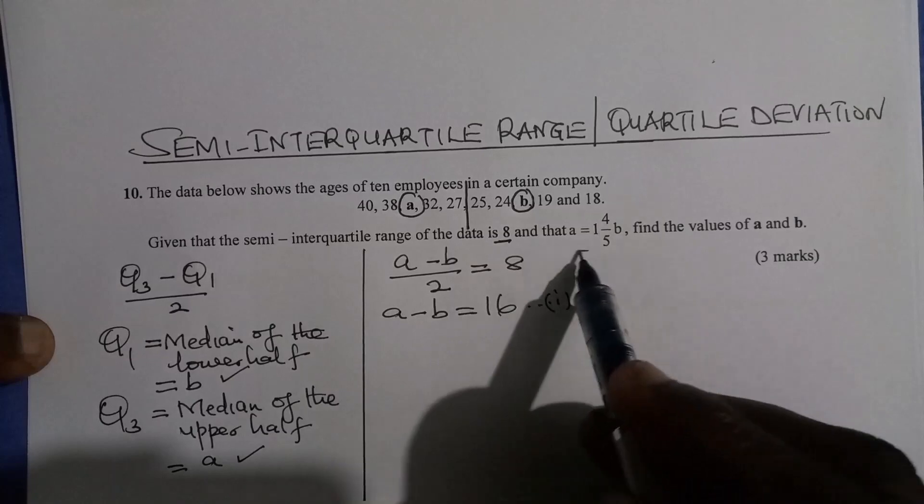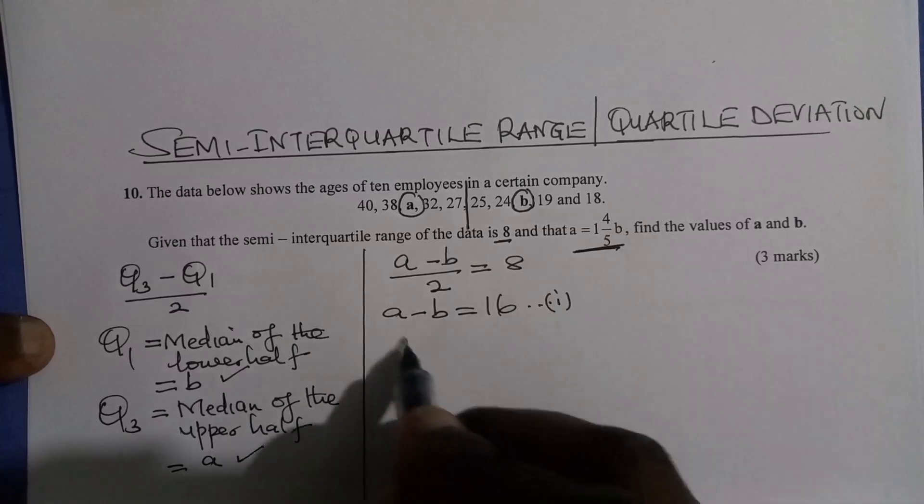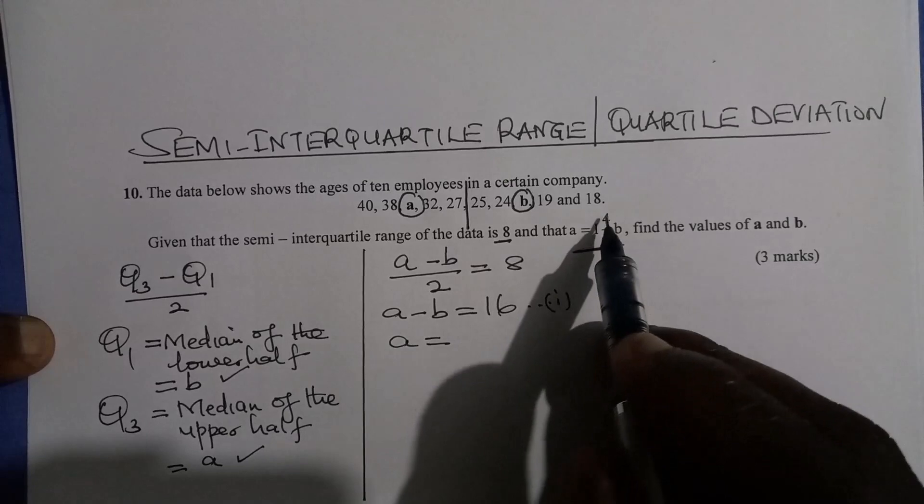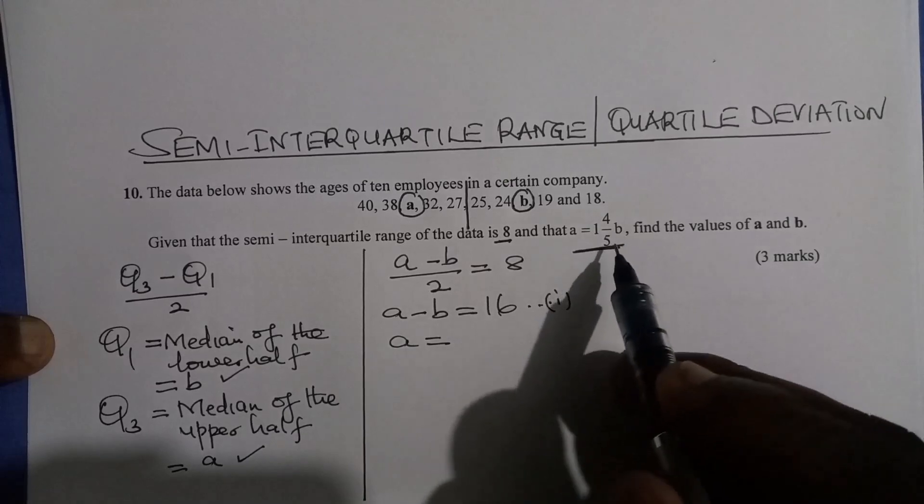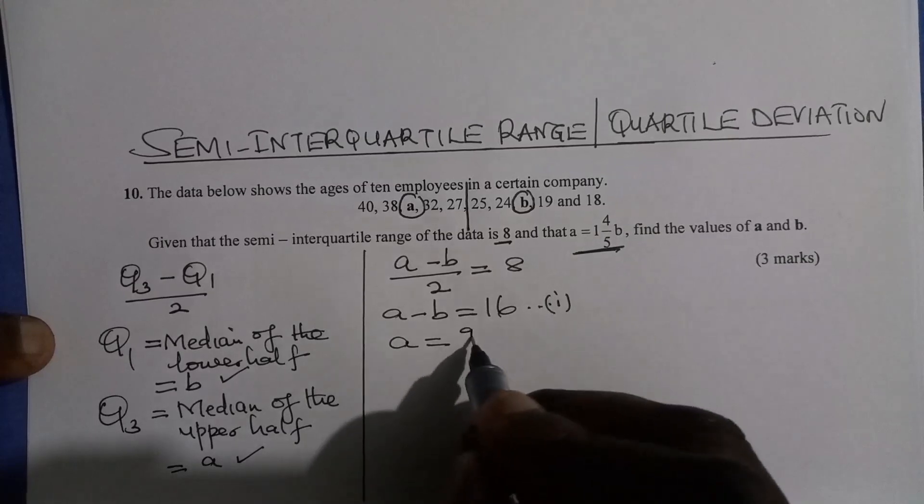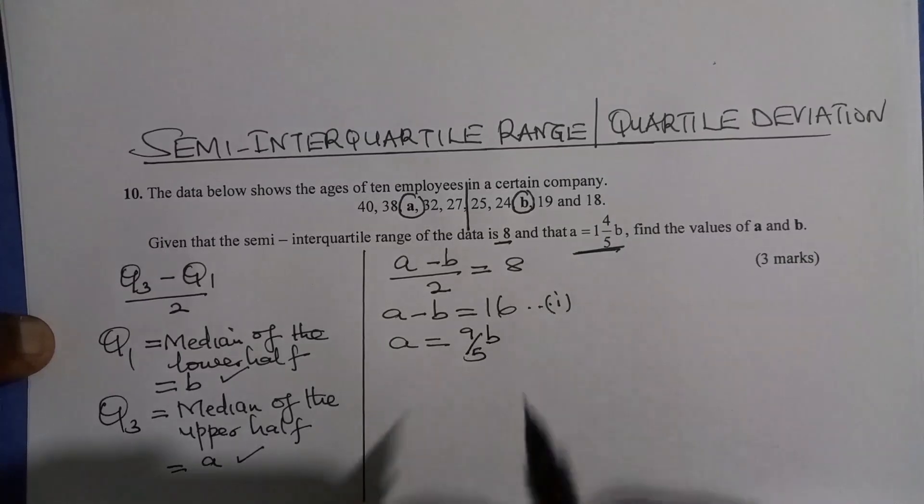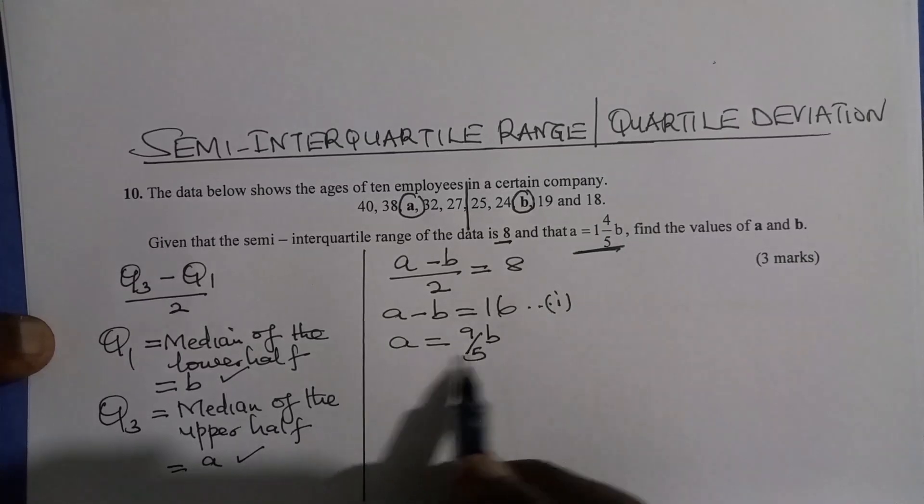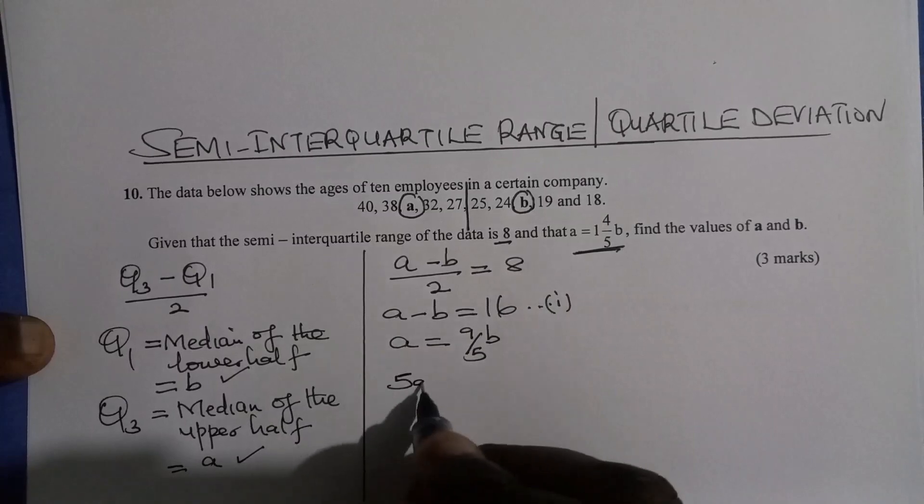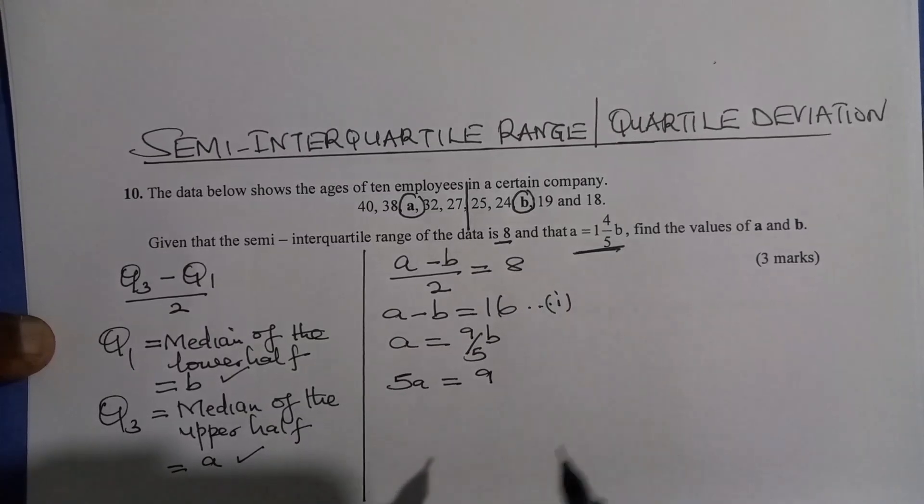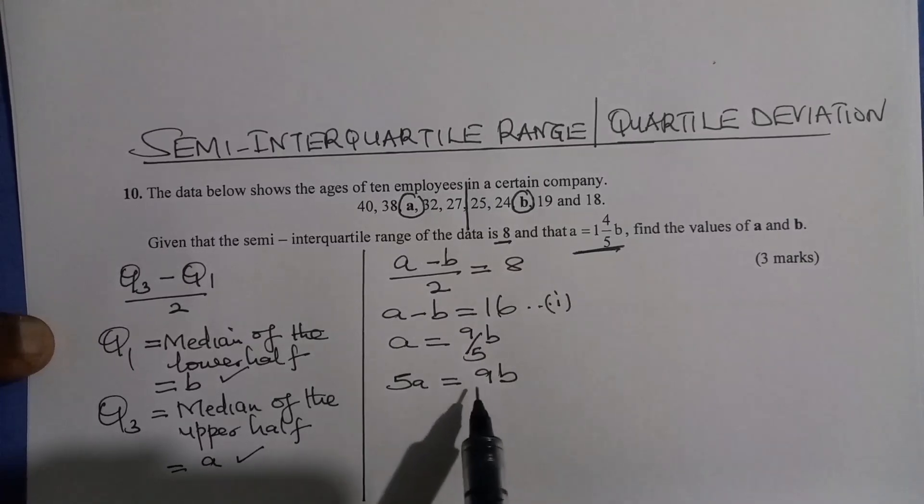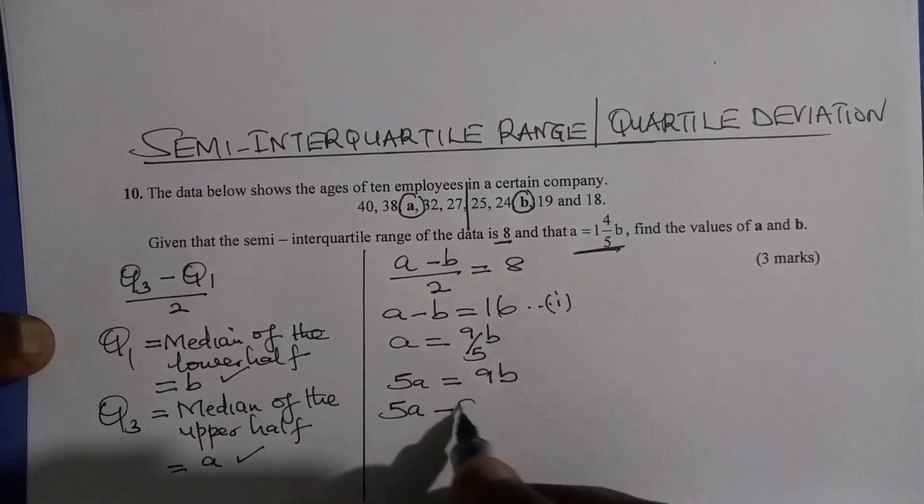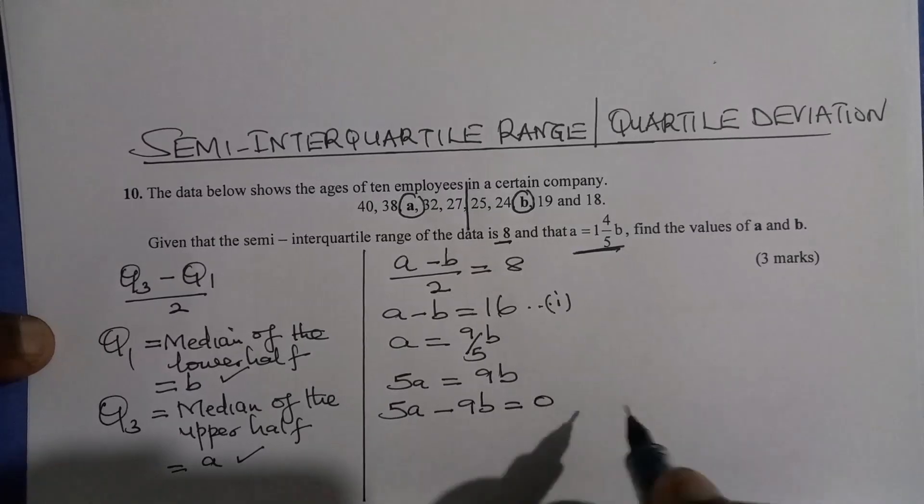You're given that A is given by 1 and 4 over 5B. So you can convert this one to an improper fraction. This would be 9 over 5B. Multiplying both sides by 5, you'll get 5A is equals to 9B. Bringing everything to the left-hand side, you shall have 5A minus 9B is equals to 0. So you have the second equation.